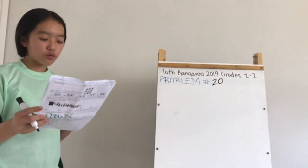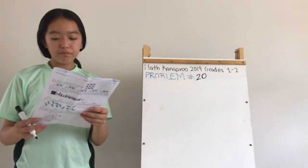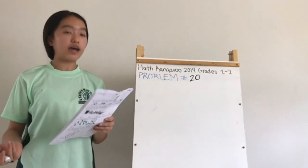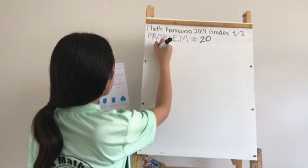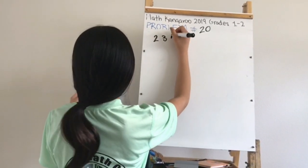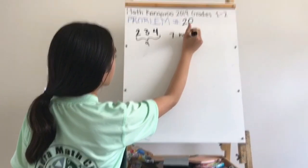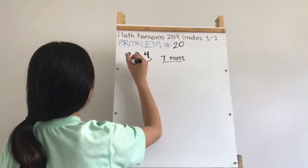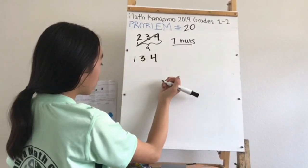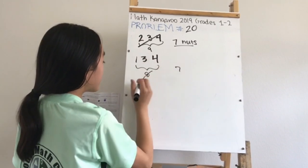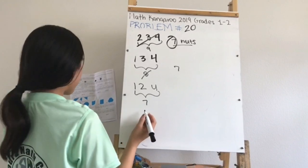Problem number twenty: three squirrels collected 7 nuts total, each a different amount, at least one each. Annie collected the least and Asia the most. If Annie collected 1, Ellie collected 2, and Asia collected 4, the total is 7. Ellie collected 2 nuts — the answer is B.